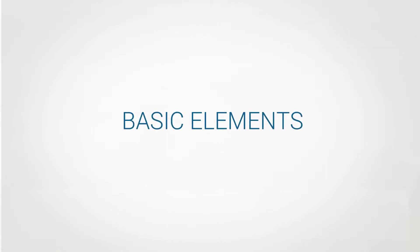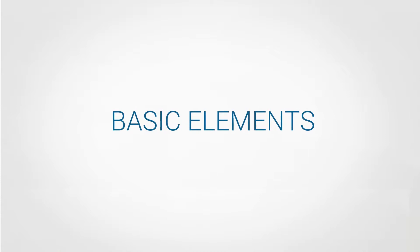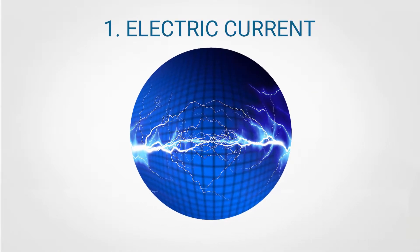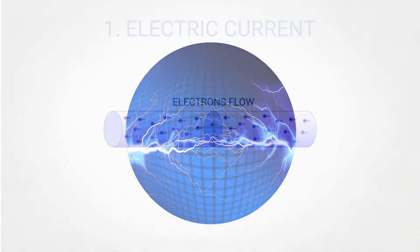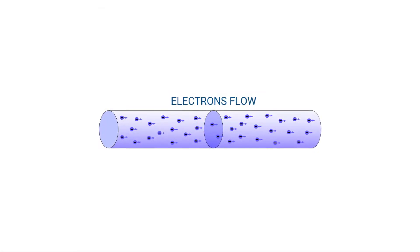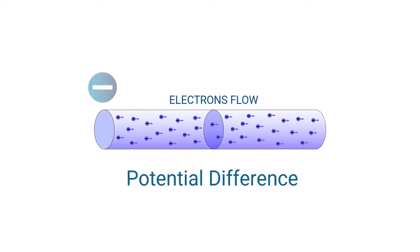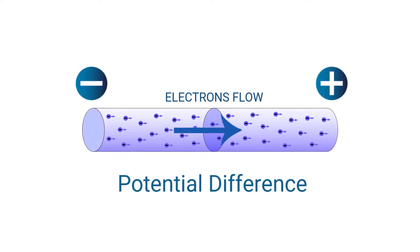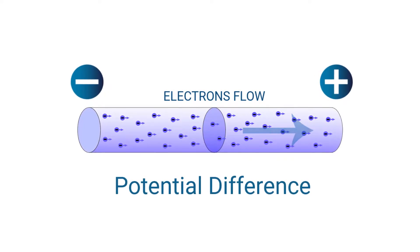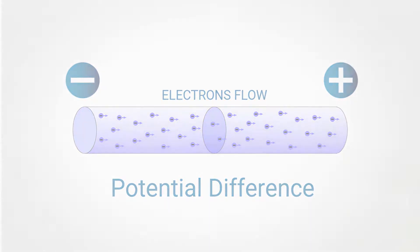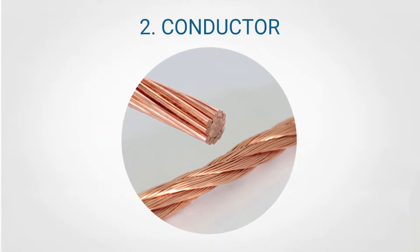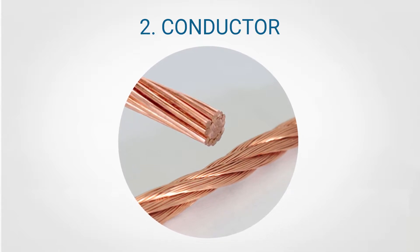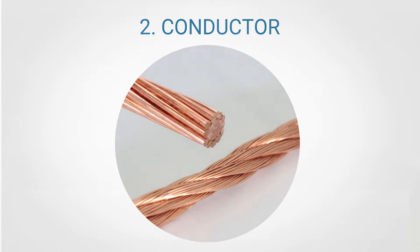Now, let's take a step back to explain in detail the basic elements of this process. Electric current simply is a flow of electric charge, which means moving electrons in a wire. Their motion is caused by an electric potential difference between two points of a conductor. This difference allows the electrons to flow from the negative pole to the positive pole. A conductor is an object or type of material that allows the flow of an electrical current in one or more directions, like metals and alloys.